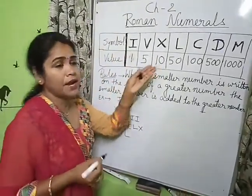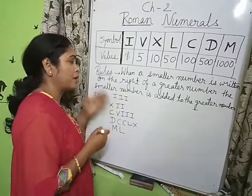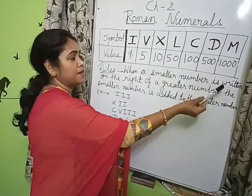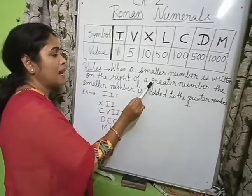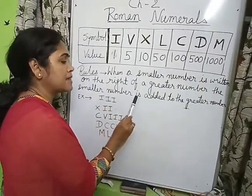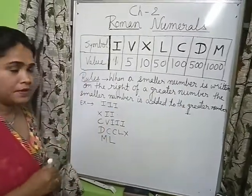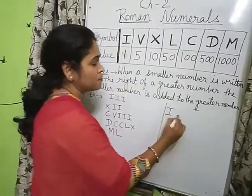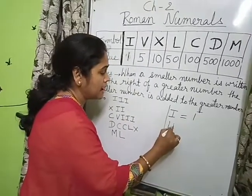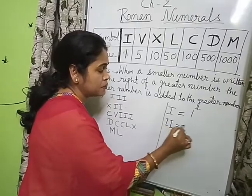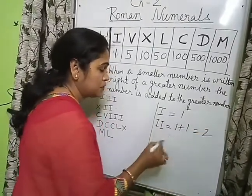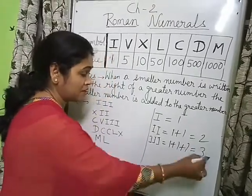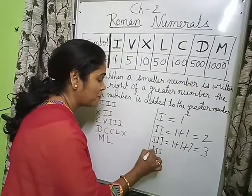By knowing only these values, how will we write numbers? I am going to tell you the rules. Rule 1: when a smaller number is written on the right side of a larger or greater number, the smaller number is added to the greater number. For example, I has the value 1. If we write I two times, it is added — so II equals 2. If we write I three times, it is 1 plus 1 plus 1, which equals 3.